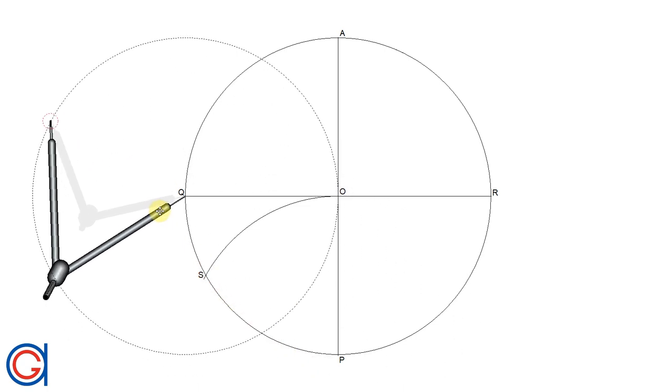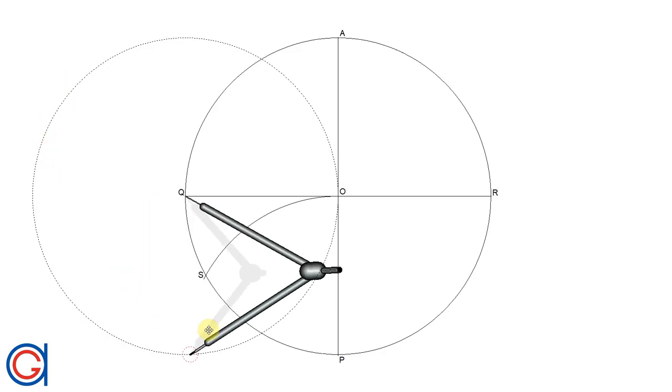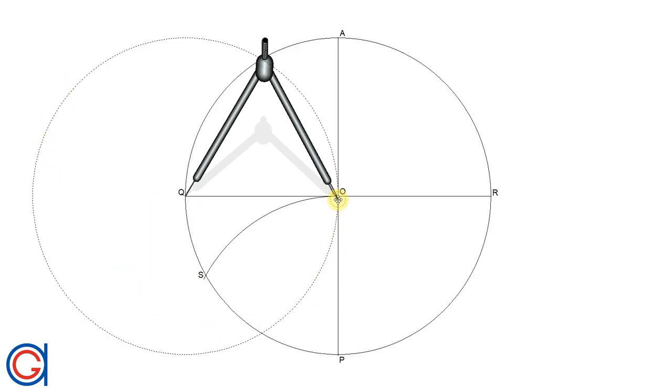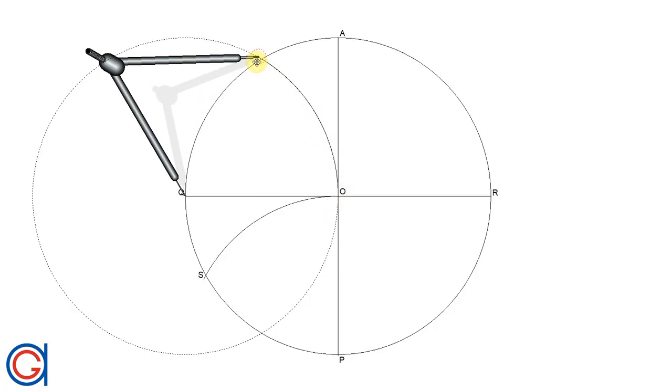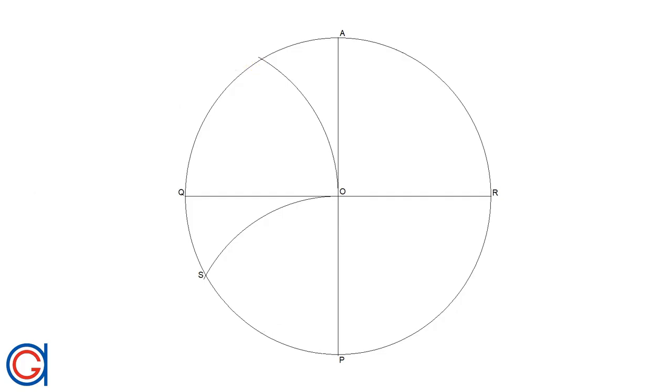So now using the same method and centering the compass on point Q with the same radius, we scribe an arc to the left until it cuts the circumference again at a new point which we will call point T.